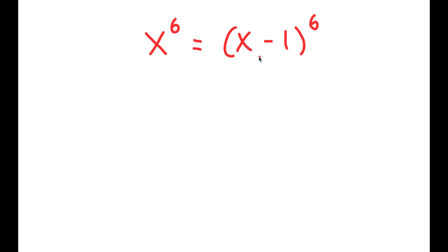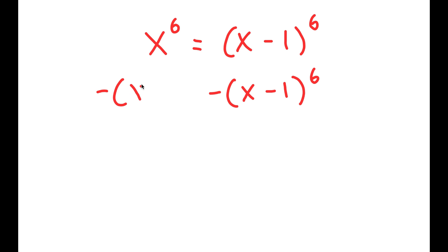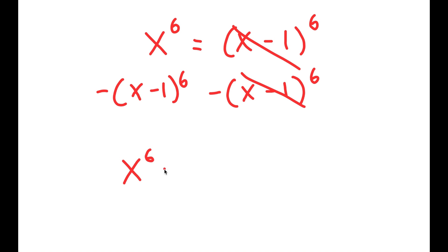To solve this, I'm going to first start by subtracting x minus 1 to the power of 6 on both sides. So then these two cancel out, and I get x to the power of 6 minus x minus 1 to the power of 6 is equal to 0.